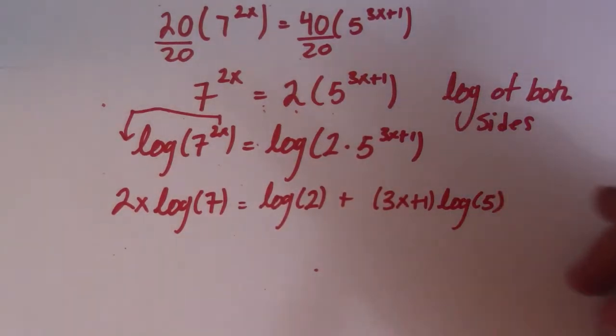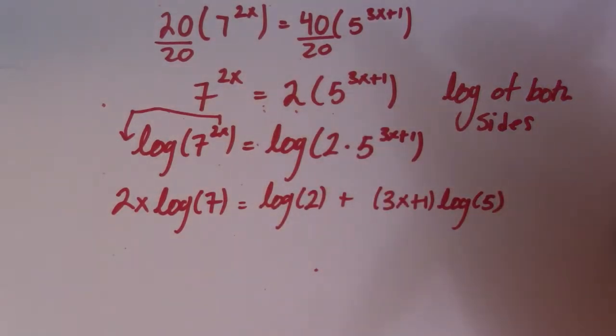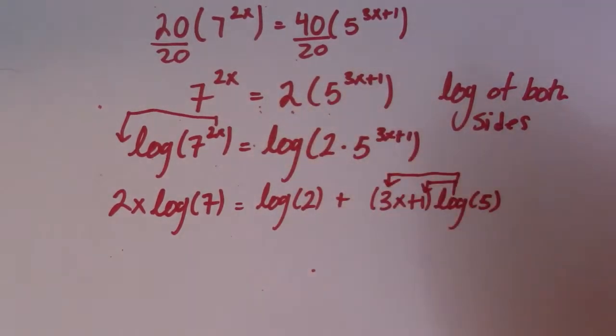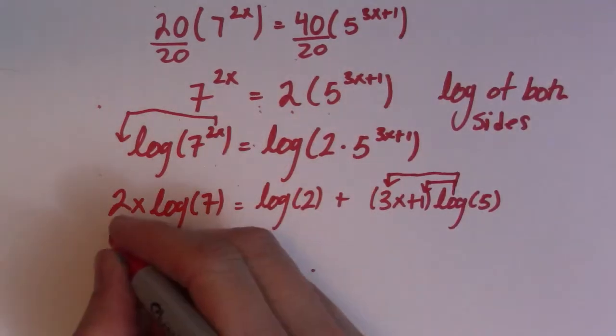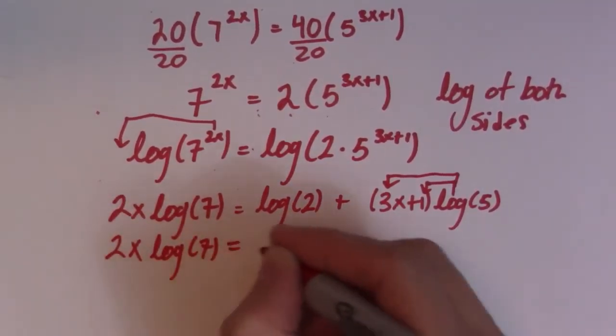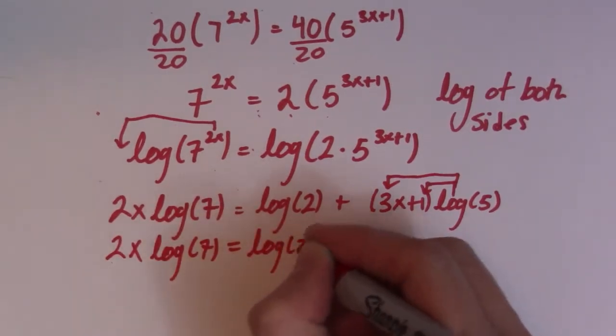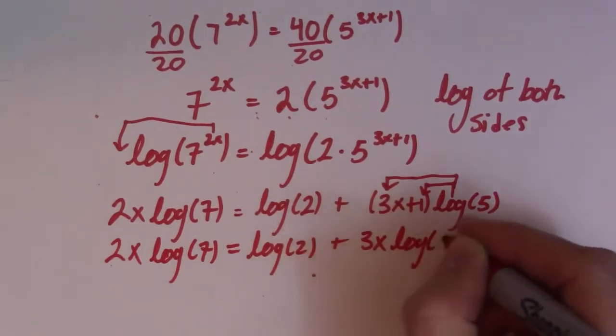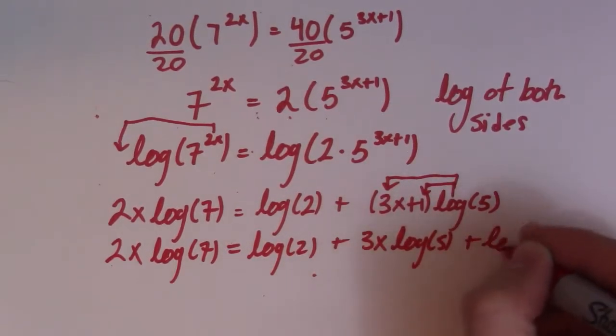All right, so when I get to this step, now what I need to do is I need to do any distribution that I have to do. So usually you're going to have at least one distribution. So I'm going to distribute here to both of these things like that. So I end up with 2x log of 7 is equal to log of 2 plus 3x times log of 5 plus log of 5.